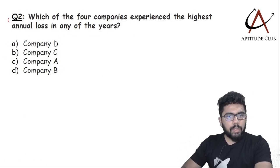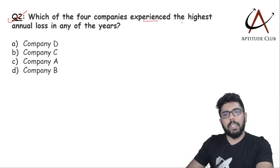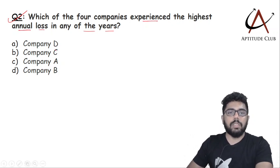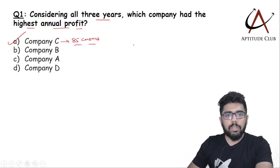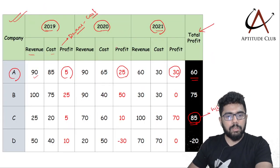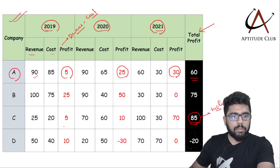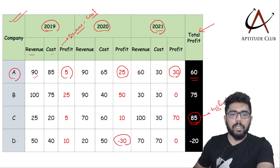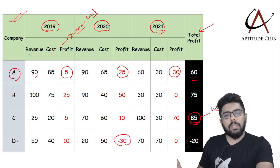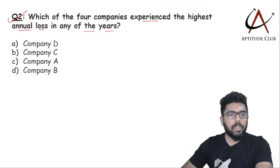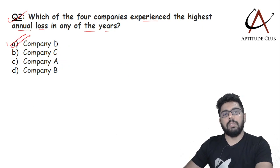Question 2: Which of the four companies experienced the highest annual loss in any of these years? Looking at the data, only one company incurred a loss — company D. None of the other companies incurred a loss. So the answer is obviously company D.